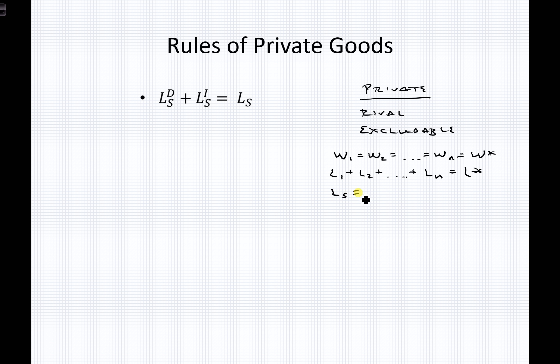We know that labor supply has been equal to labor demand, and since it's a competitive market, the marginal revenue product of labor is equal to the marginal expense of labor. We think of this set of rules as the governing dynamics of private goods applied to the labor market. W in the goods market would be P, and L in the goods market would be Q. But in the labor market, thinking of labor as a private good, the governing dynamics of private goods hold here.